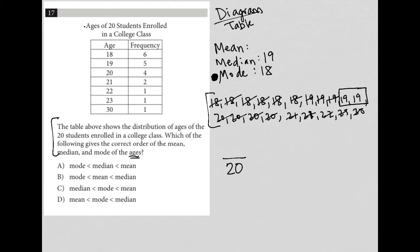I'll do it a little bit faster. 18 times 6 is 108, 19 times 5 is 95, 20 times 4 is 80, and 21 times 2 is 42. Let's add these larger numbers together: 108 plus 95 plus 80 plus 42 gives me 325.